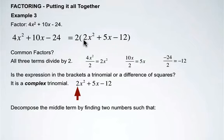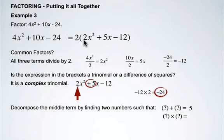We'll decompose the middle term by finding two numbers such that together they give us 5 when we add them, and when we multiply them they'll give us 24, which is our third term multiplied by the a value.